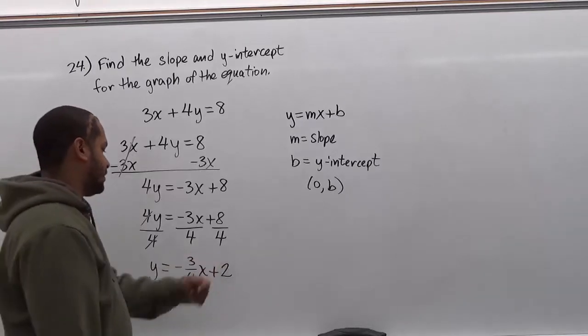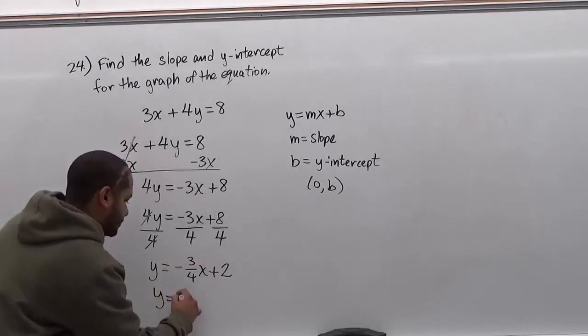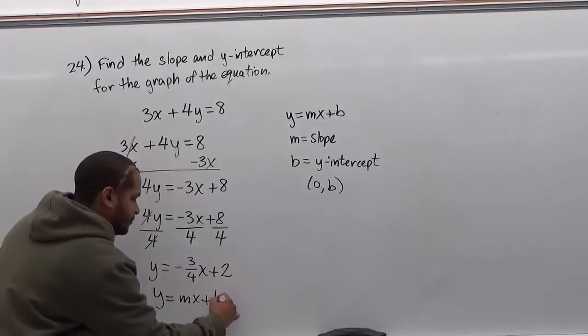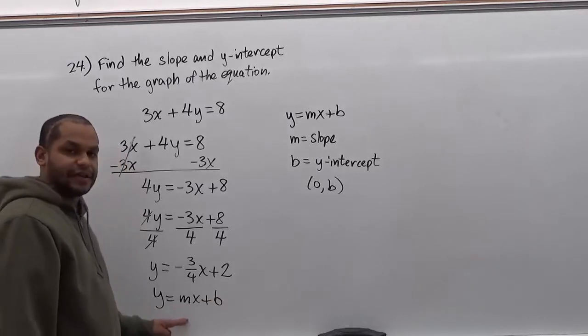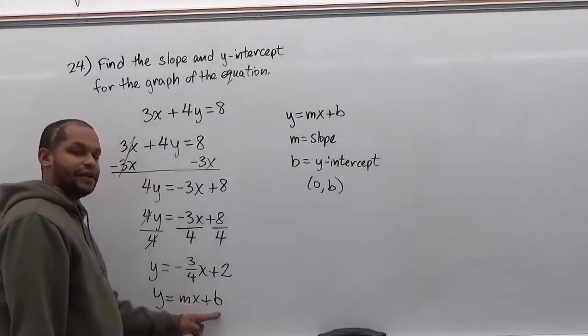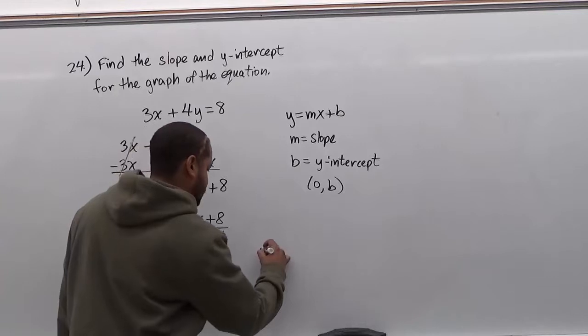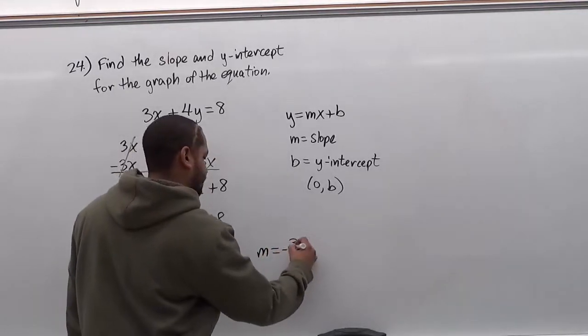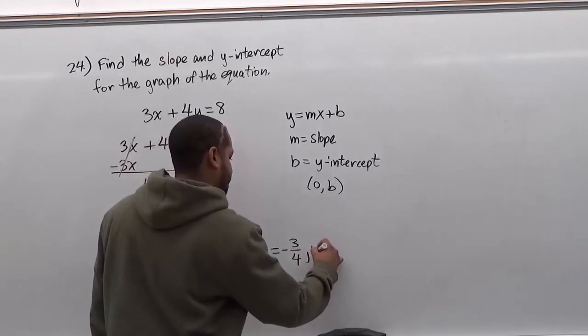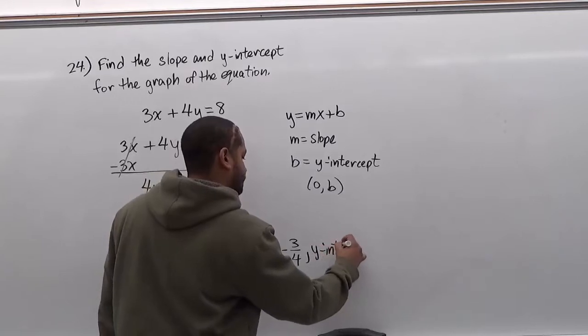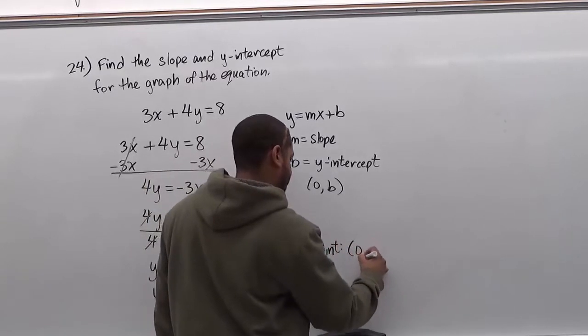So here we see in the form of y equals mx plus b that our slope is negative 3 quarters and our y-intercept is (0, 2).